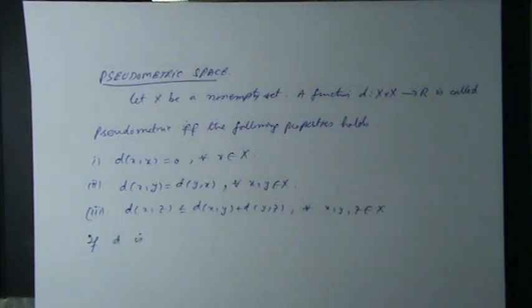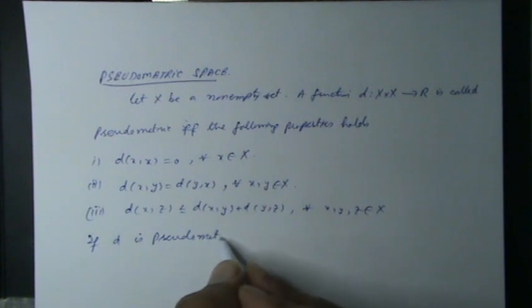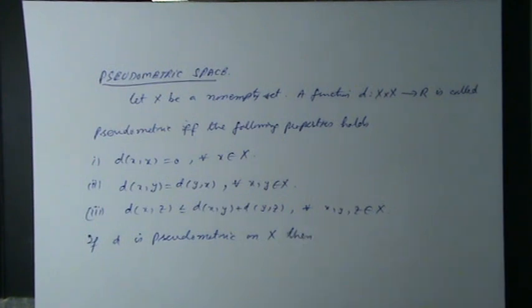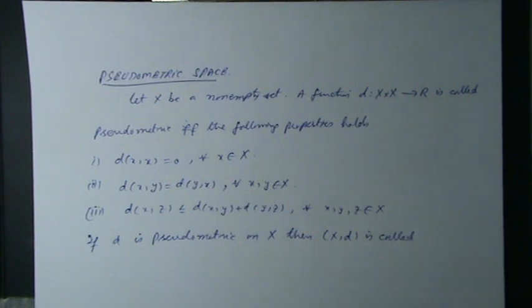If D is a pseudometric on X, then the pair X comma D is called a pseudometric space.